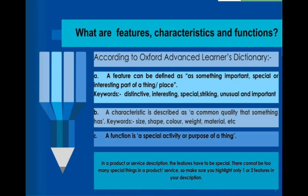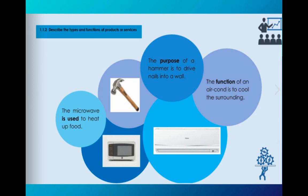We have discussed a lot about features, characteristics and functions of a product, and I believe by now you have also seen all the videos sent to you, so you'll be able to differentiate the differences and understand why it is so important to mention all this in your product description or service description. For example: the microwave is used to heat up food, the purpose of a hammer is to drive nails into a wall, and the function of an aircon is to cool the surrounding. This is talking about the function of the product.